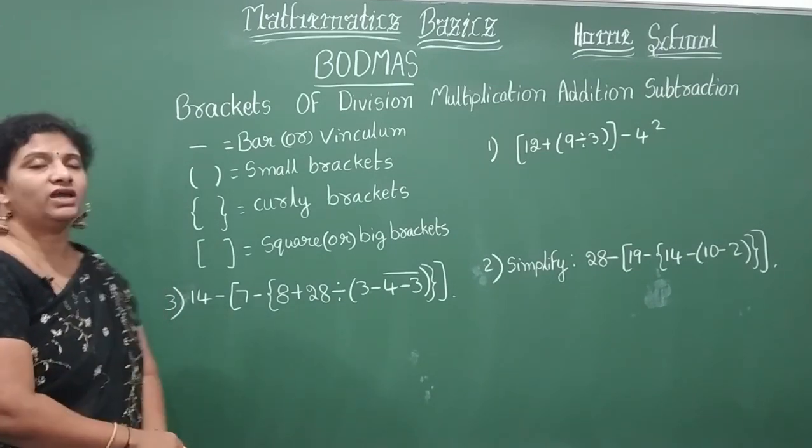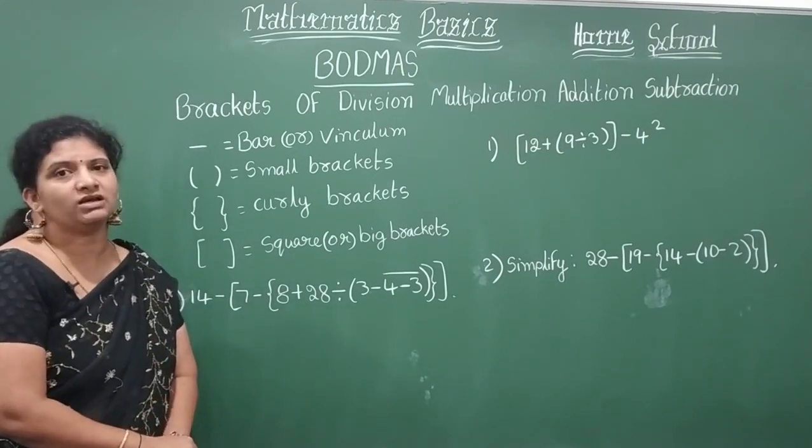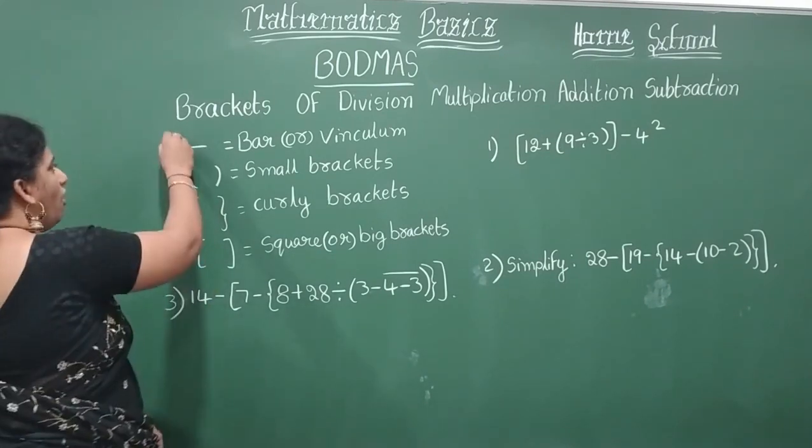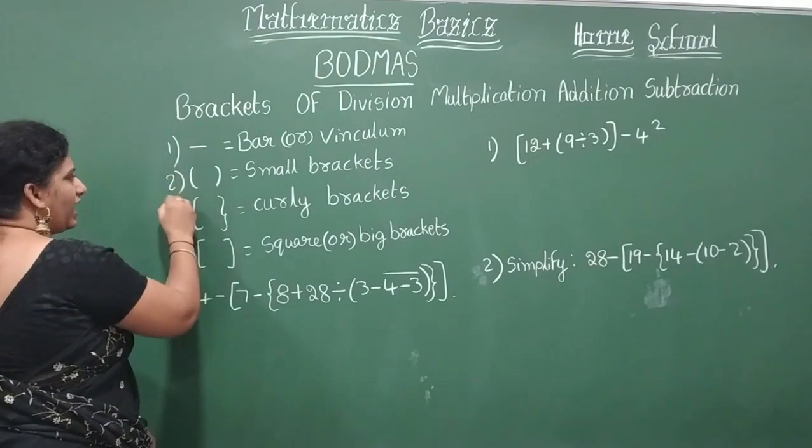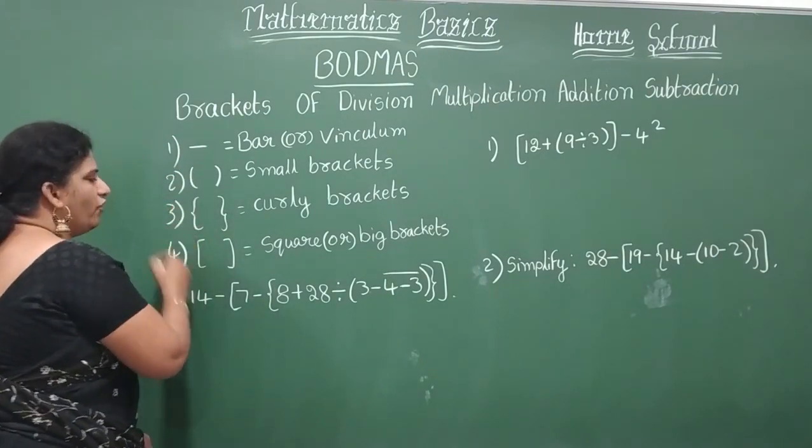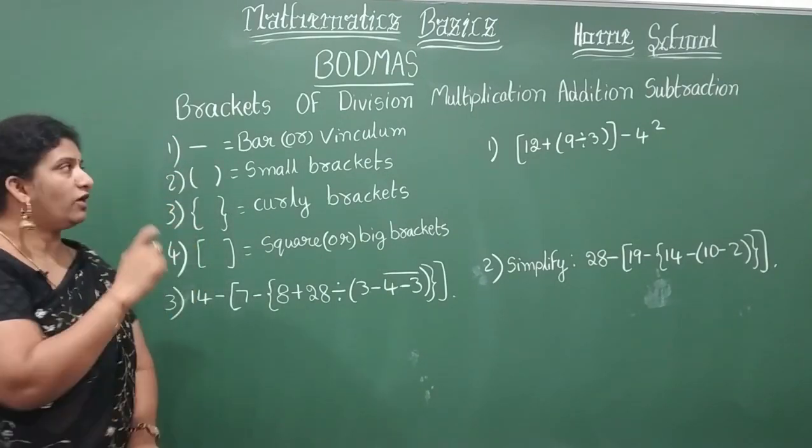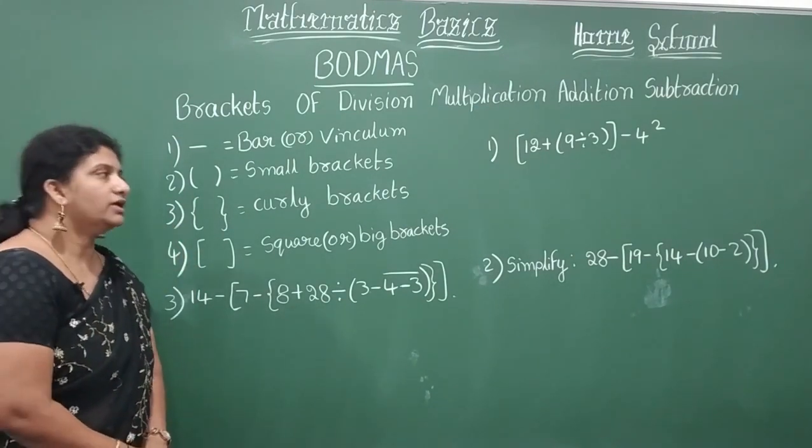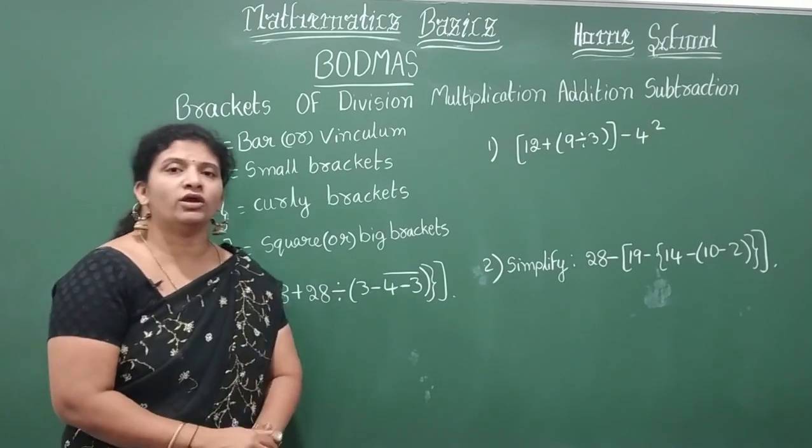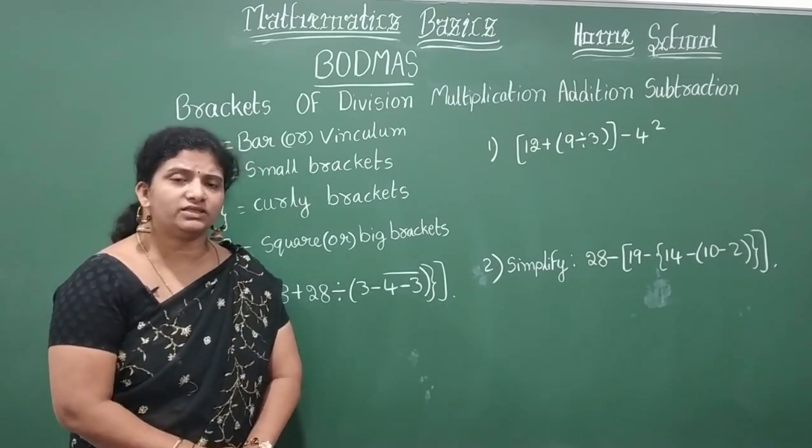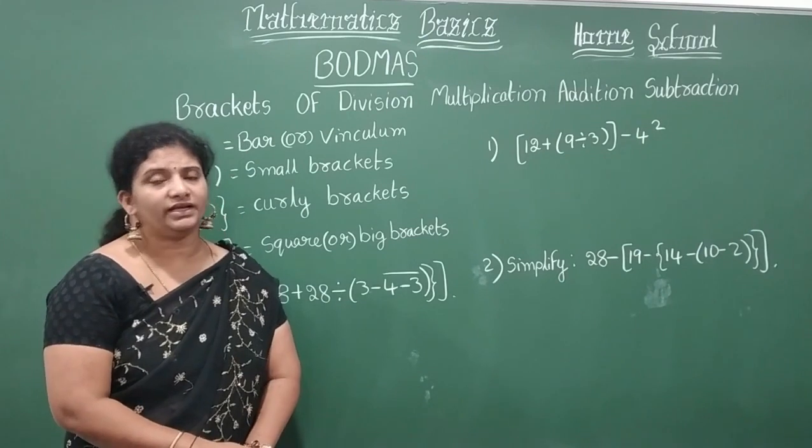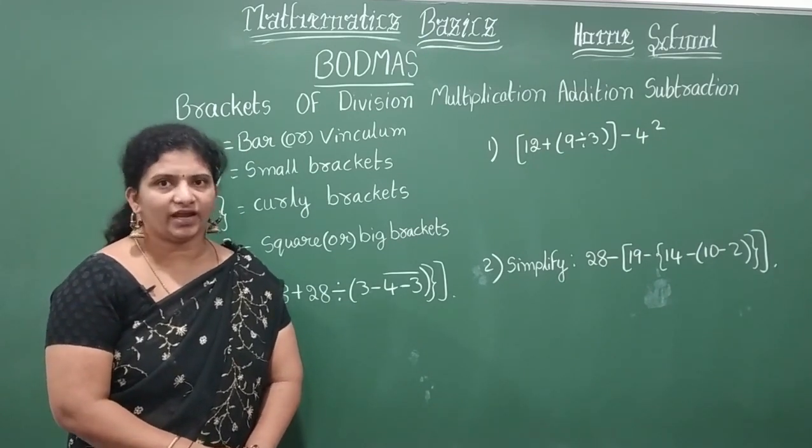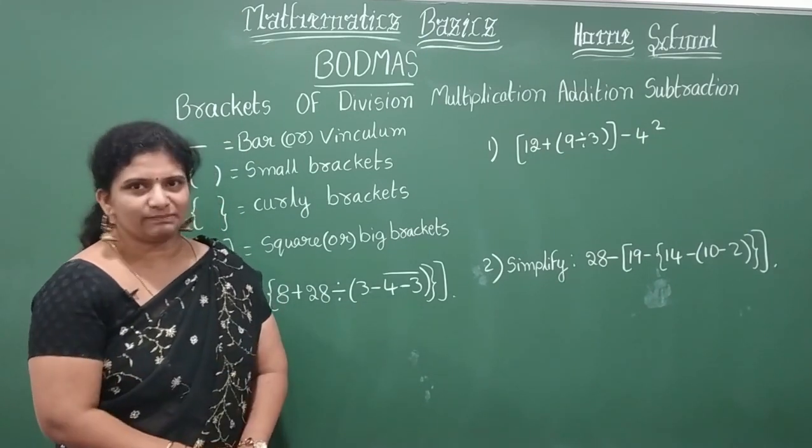So how to simplify any expression here children? By this order: first, second, third, fourth. So according to this you have to observe in any expression and try to solve. Children till now you might be knowing all the addition, multiplication, subtraction rules of integers and all. So now this is very simple for you.